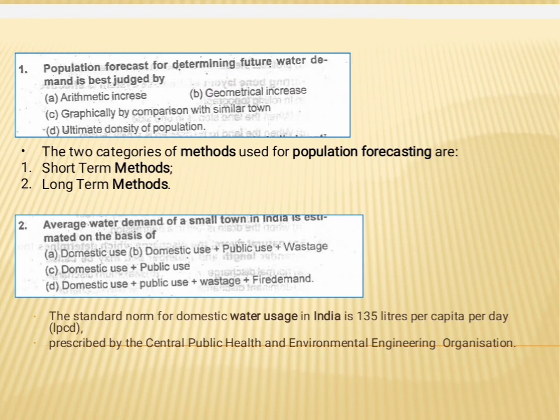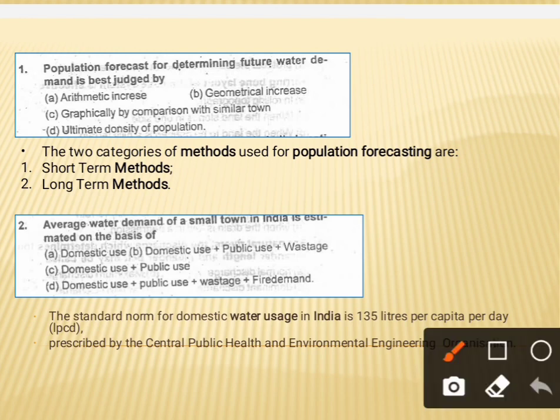The next question says that the average water demand of a small town in India is estimated on the basis of what. The correct answer is option B, which is domestic use plus public use plus wastages. On this basis, we can easily determine the average water demand of a small town in India.